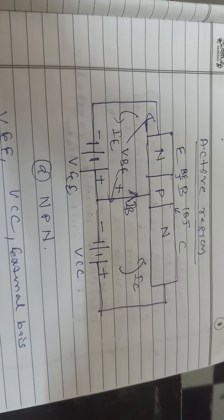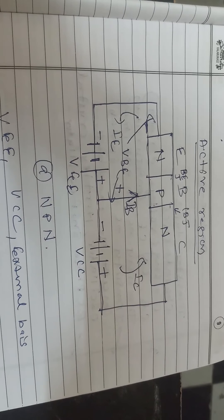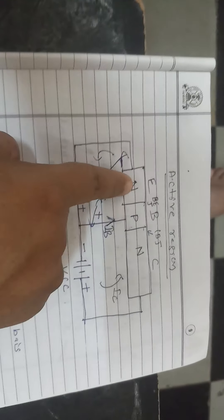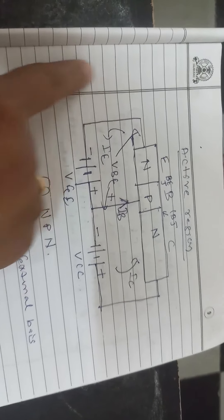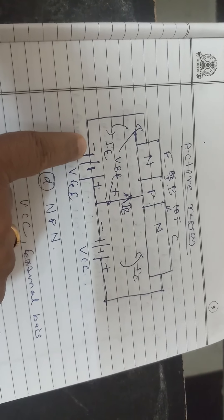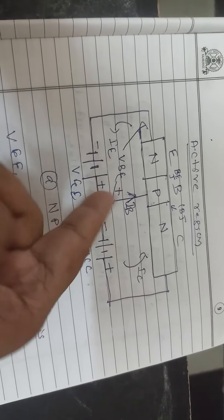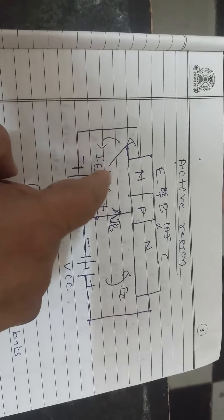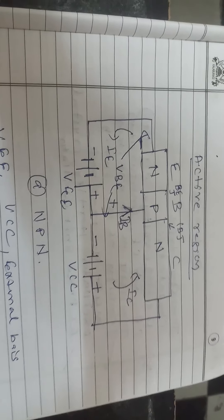In the PNP type, the polarities are reversed. Since P is positive, the positive and negative connections must be reversed. The currents flow in the opposite direction — for example, IE flows clockwise instead. So everything is reversed in the PNP type. The different configurations will be discussed in the next class. Thank you.